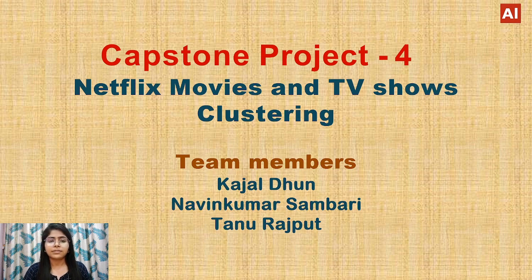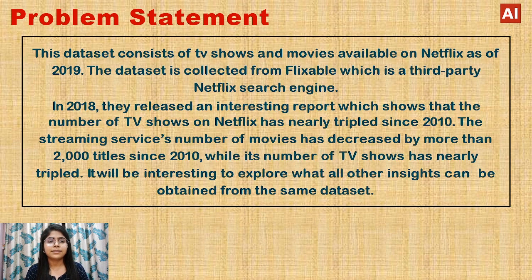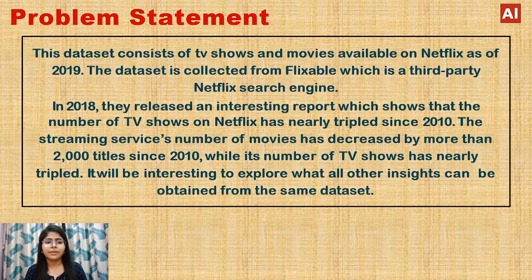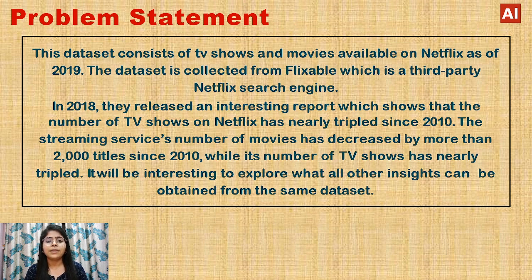Let's look at the problem statement first. This dataset consists of TV shows and movies available on Netflix as of 2019. The dataset is collected from Flixable, a third-party Netflix search engine. In 2018, they released an interesting report showing that the number of TV shows on Netflix has nearly tripled since 2010, while the number of movies has decreased by more than 2000 titles since 2010. It will be interesting to explore what other insights can be obtained from this dataset.